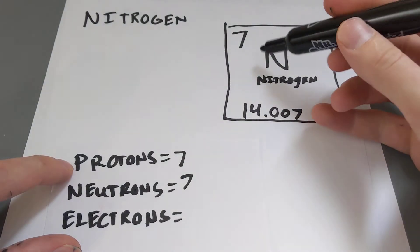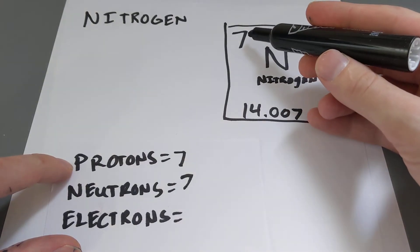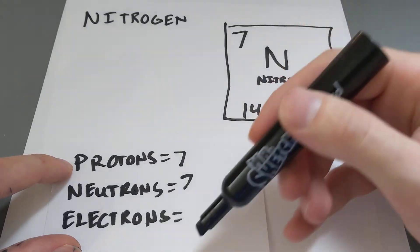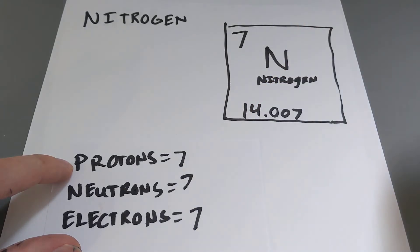And for this class, and for most chemistry that's not ions, the number of protons will equal the number of electrons, which in this case is also 7.